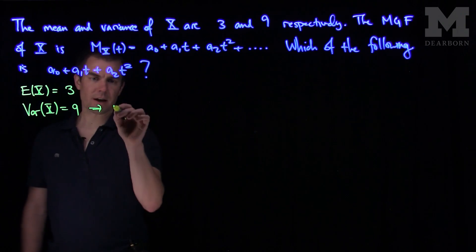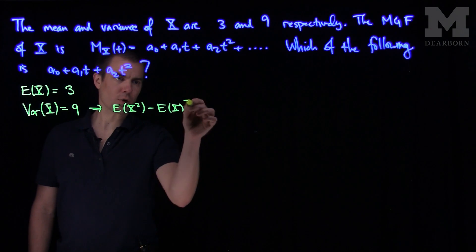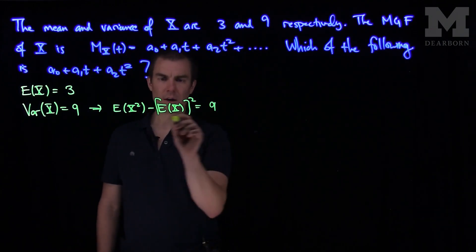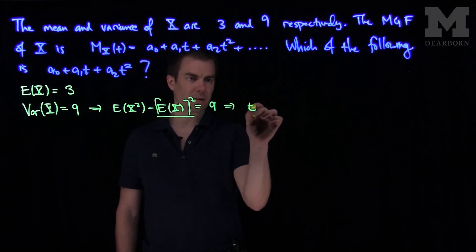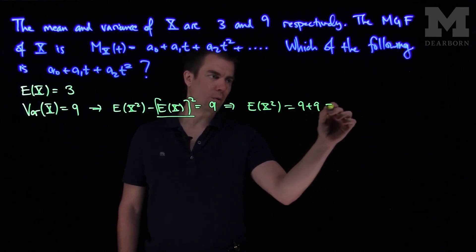Now, the variance of X is the expected value of X squared minus the expected value of X quantity squared. And that is equal to 9. We know the expected value of X is 3, so this over here is 9. That tells me that the expected value of X squared is equal to 9 plus 9, or 18.